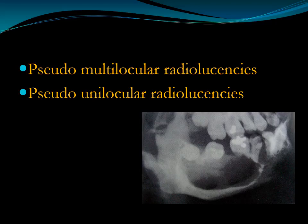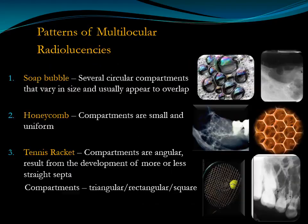What is pseudo-unilocular radiolucency? It is actually a multilocular radiolucency, but the septa are very thin and indistinct in the image. They are not seen clearly because either they are very thin or the density of the septa is very low. That is why they do not appear prominent in the radiographic image and appear like unilocular. In that case, they are called pseudo-unilocular radiolucency.